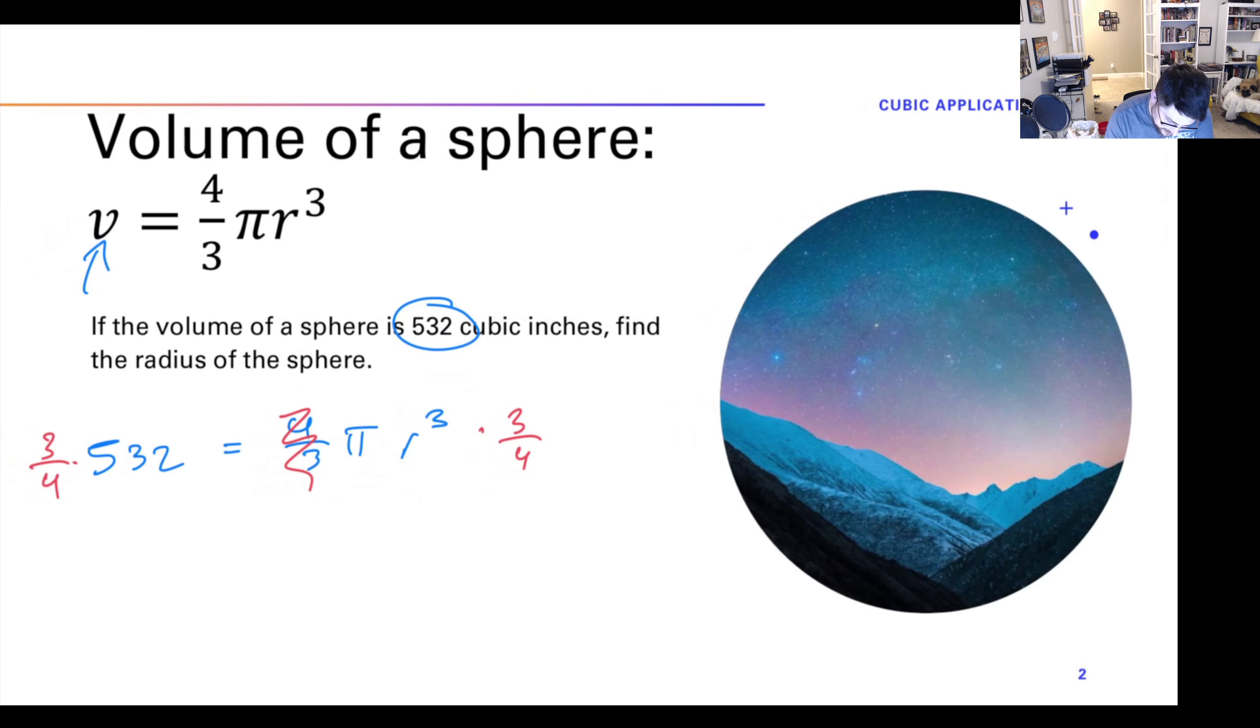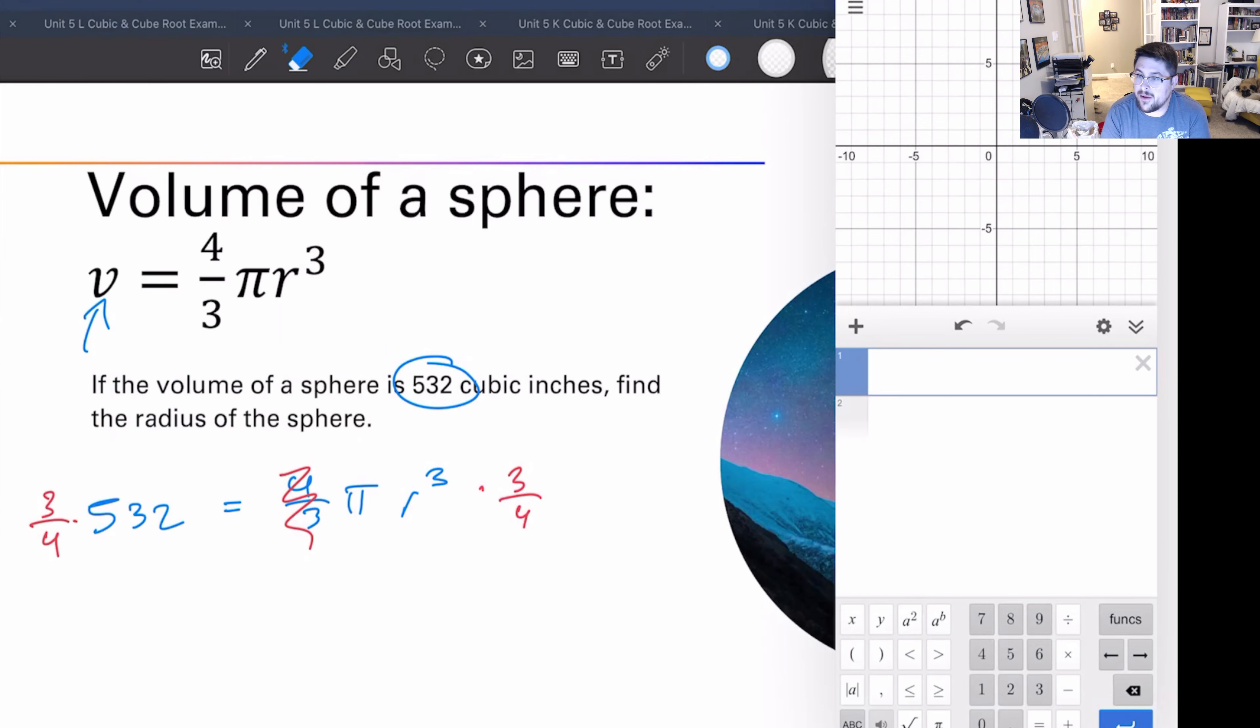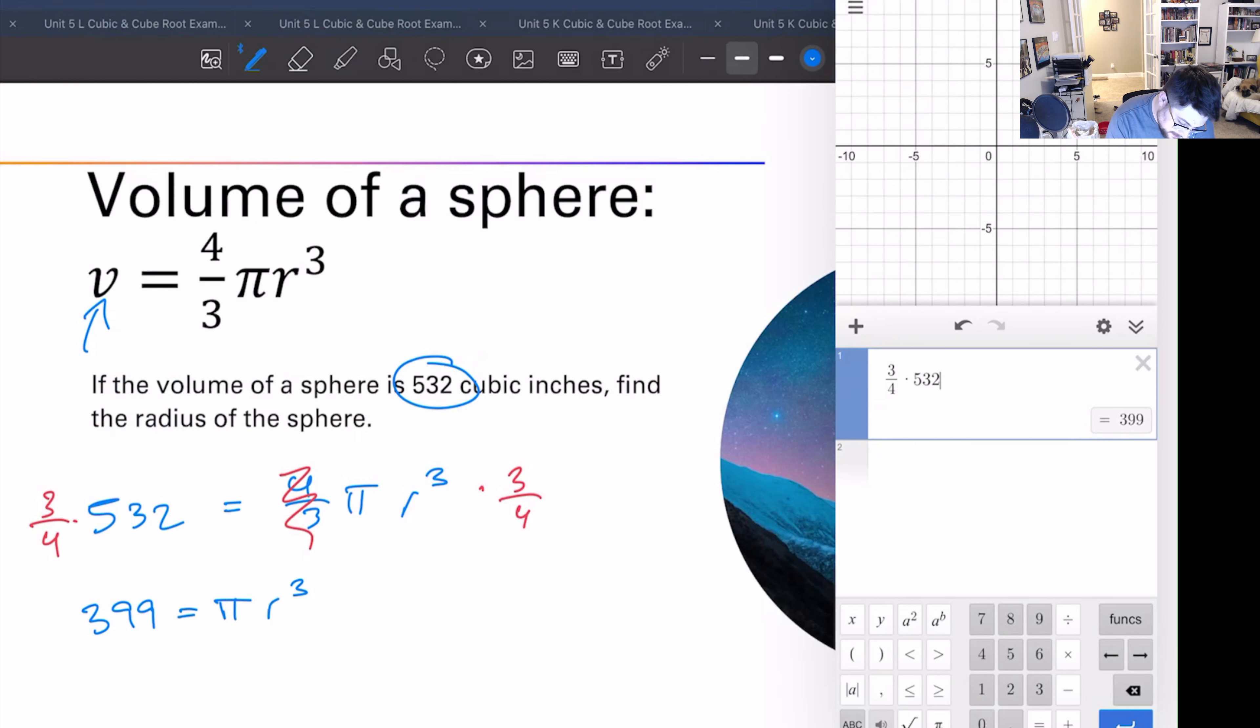You know what, we can go ahead and multiply that. Do I have a Desmos available? Don't, okay, well we will worry about Desmos when it comes to it. Let's see, here we go. Boom, got myself a Desmos and let me make it where you can see my Desmos. There, you have a Desmos.